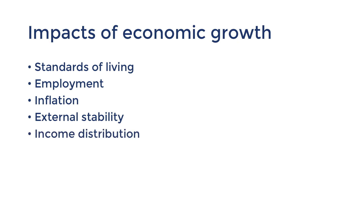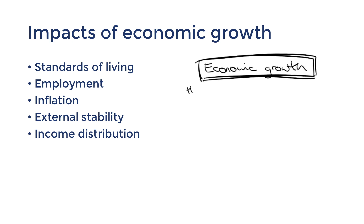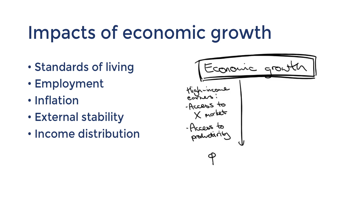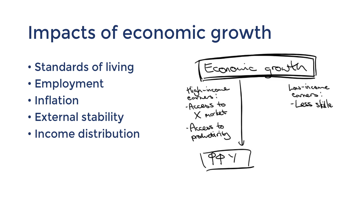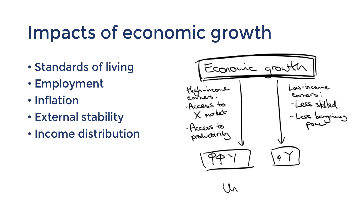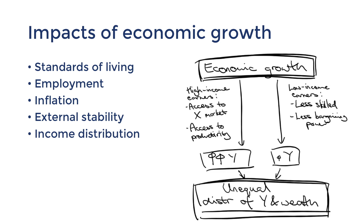Income distribution is often more unequal as a result of economic growth, at least in the short term. In Australia, the most profitable businesses are often the ones that have access to export markets and the most productive resources. These are naturally concentrated towards high wealth and high income communities, and therefore the rich usually get richer at a higher rate compared to low income earners. Furthermore, low income earners usually have lower skills and less bargaining power, so while the economy is growing, they see relatively smaller increases in income. In summary, while the whole economy sees improved standards of living, the gap between rich and poor could get wider with economic growth, worsening the Gini index.